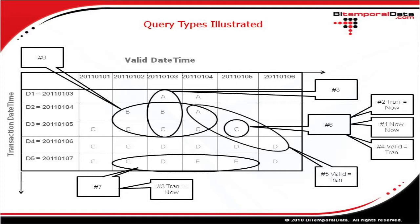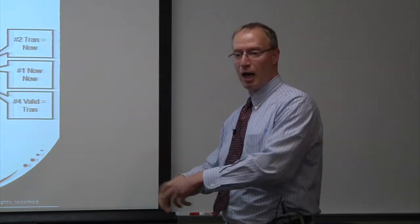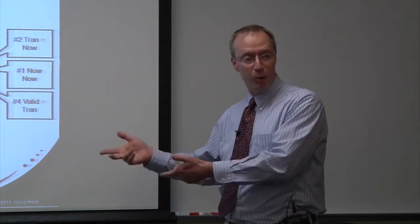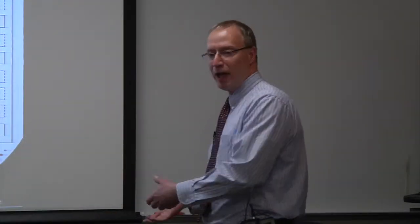Query type 2 is a valid temporal query — the transaction time is 'now' but the valid time is an input parameter, returning a single cell. Type 3 is also a valid temporal query: the transaction time is 'now' but the valid time is a range. We'll tie these to real-world business cases to show why this is so powerful and why it addresses things that are very hard to do today.